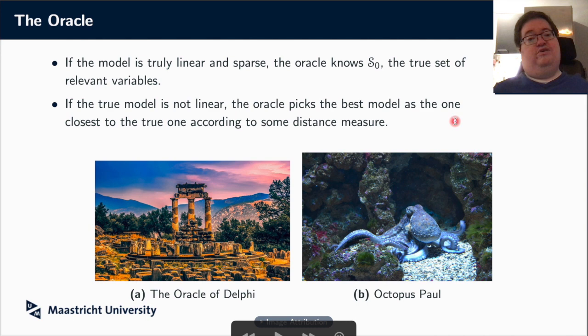So the oracle is the all-knowing entity. There are two oracles given here on the slide. The first is from ancient Greece, the oracle of Delphi, which could predict the future. The second one is a bit more modern. That's Paul the octopus, who about 10 years ago showed remarkable ability in predicting the outcome of football games. He predicted, for instance, at the World Cup in 2010 many games correctly.